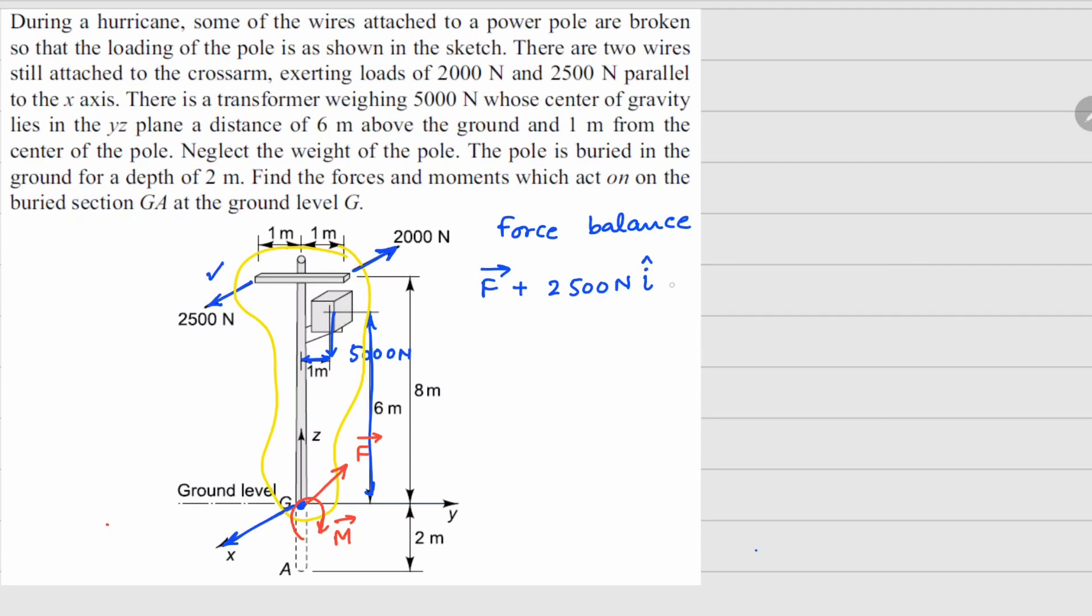The next force is this 2000 newton here which is going to be in the negative x direction. And the last one is the transformer force which is going to be in the z direction. But since it acting downwards, it will be minus 5000 newtons k cap.